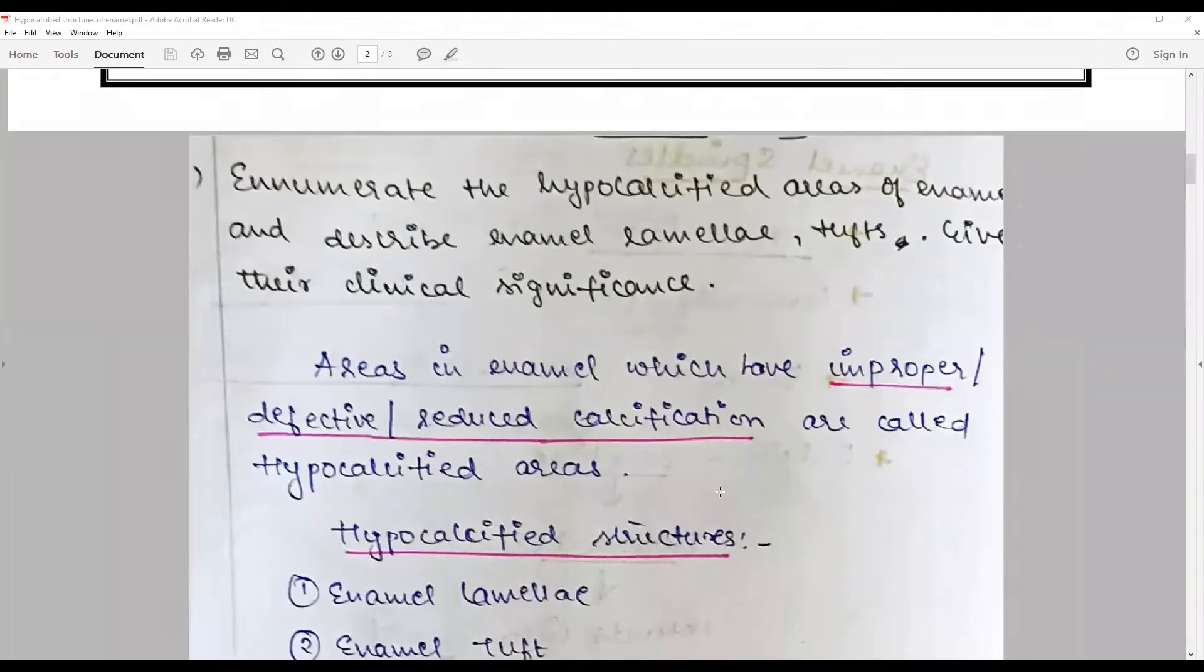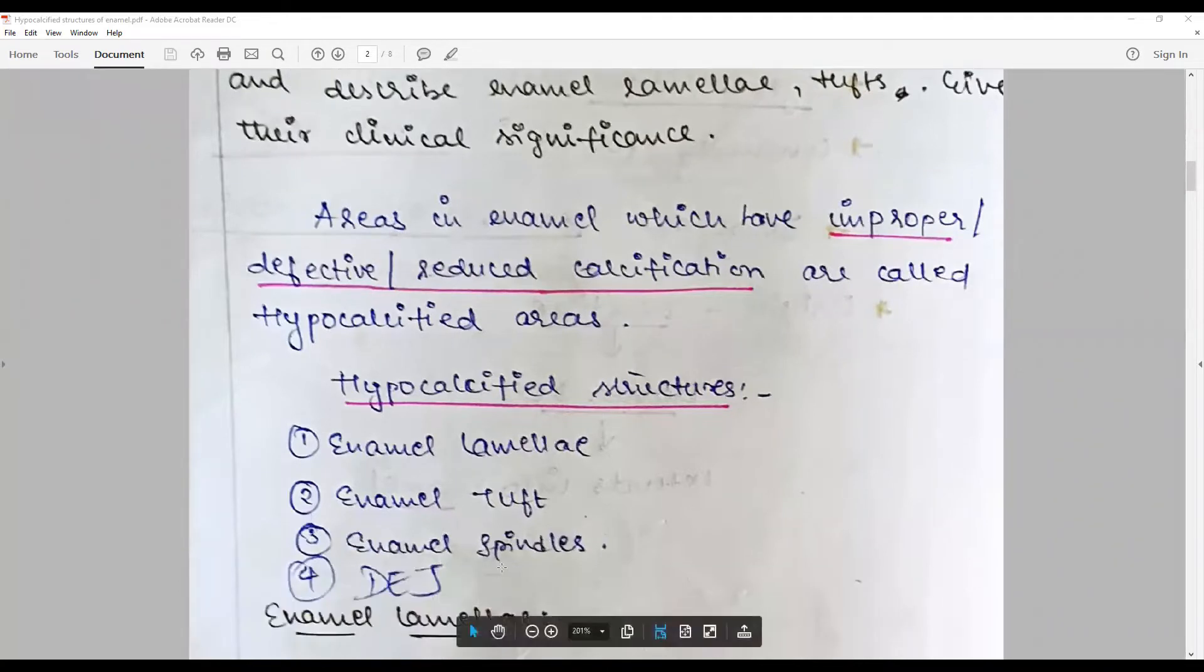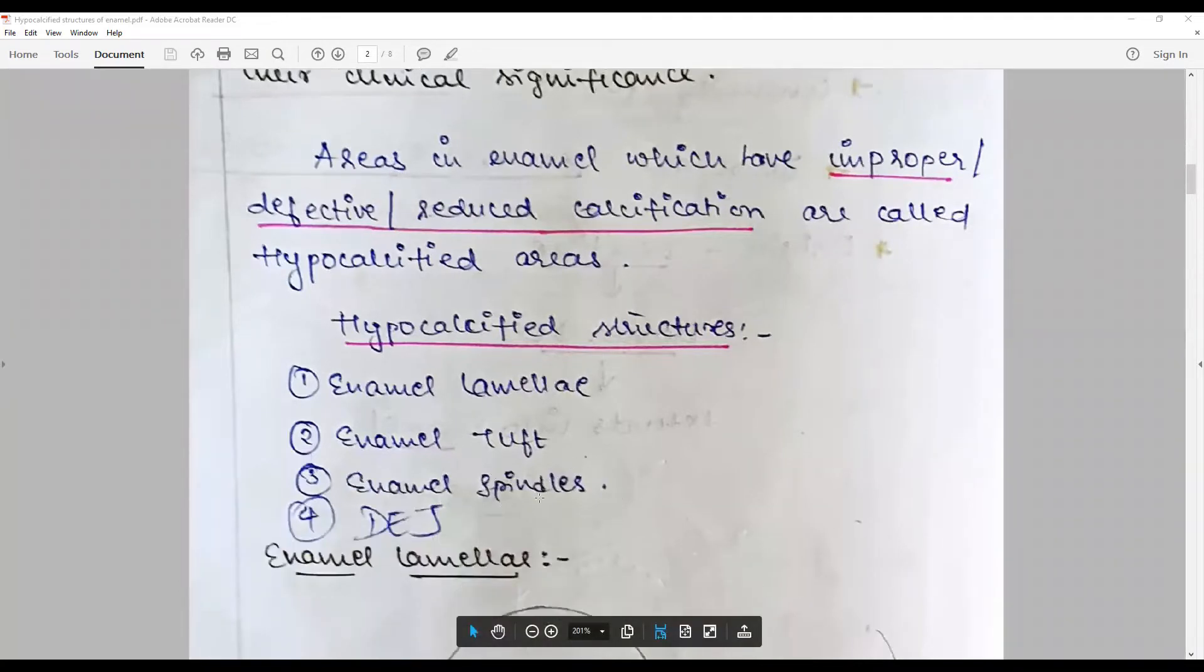Areas in enamel which have improper, defective, or reduced calcification as compared to the normal enamel counterpart are called hypocalcified areas. They are improper or defective or reduced calcification as compared to the 96% inorganic calcification of enamel. The hypocalcified structures are enamel lamella, tufts, spindles, and DEJ.